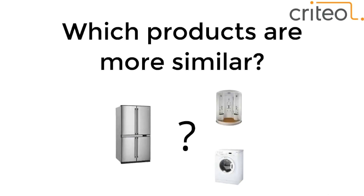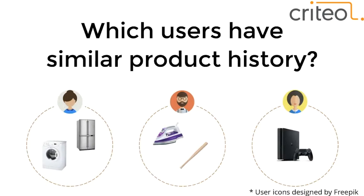We always want to know not just what the best recommendations to show users are, but some general properties of products — which products are more similar to each other. For instance, is a fridge more similar to a shower or to a washing machine? Can we establish some kind of metric for these entities, and can we map it to users so we can measure which users are more similar to each other?